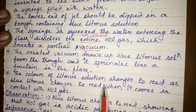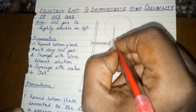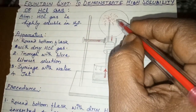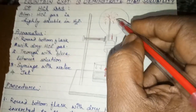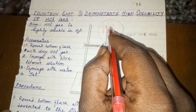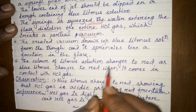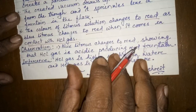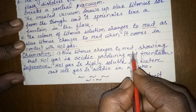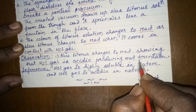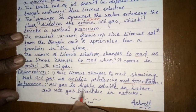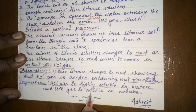The observation is that blue litmus changes to red, showing that HCl gas is acidic in nature and produces a red fountain. The inference and conclusion: HCl gas is highly soluble in water, and HCl gas is acidic in nature.